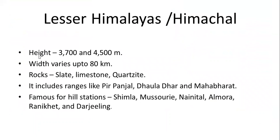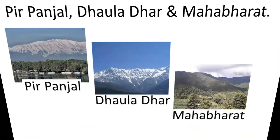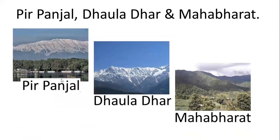Lesser Himalayas, or Himachal, have a height of around 3,700 to 4,500 meters and a width that varies from 10 to 80 kilometers. Rocks like slate, limestone, and quartzite are present there, and because of that, mining is going on — causing high threats to the Himalayas. Urbanization, erosion, and deforestation are all problems in this place. The Lesser Himalayas include the Pir Panjal, Dhauladhar, and Mahabharat ranges, and are famous for hill stations.